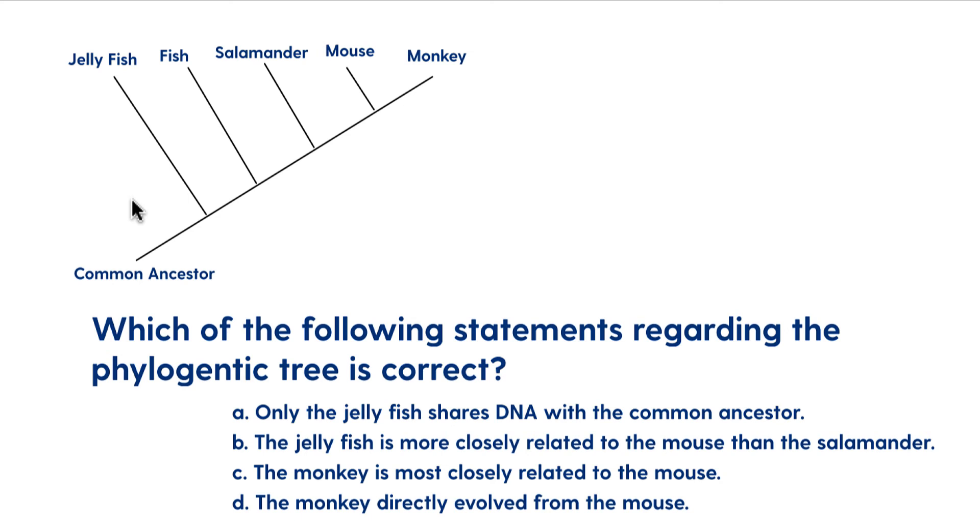The monkey directly evolved from the mouse. This statement is often something when we talk about evolution or relationships between organisms that people get wrong. We're not saying here that the monkey evolved from the mouse or that the mouse evolved from the salamander or the salamander evolved from the fish. It's all just about how closely related they are. This idea of evolving from, it gets to be a little sticky. It's not really what we're saying when we talk about evolution.